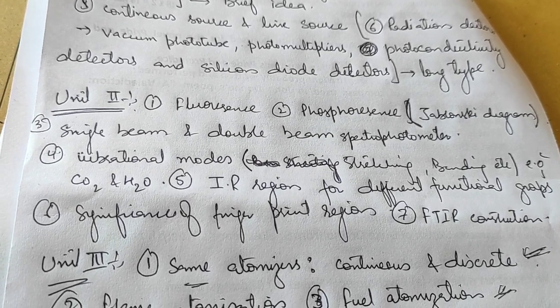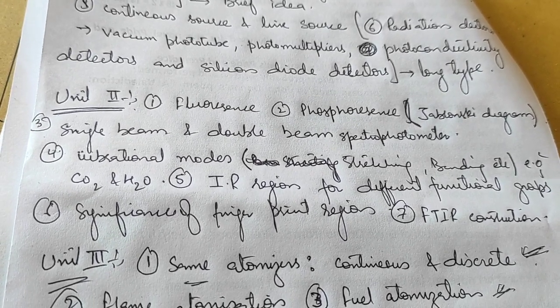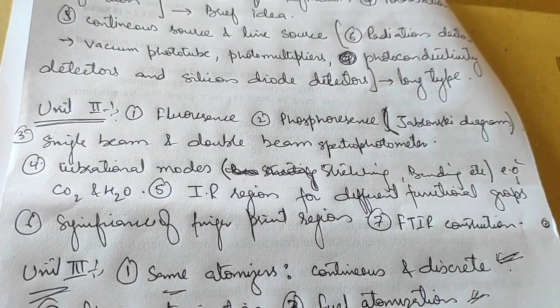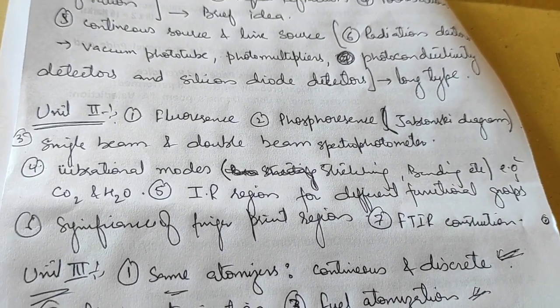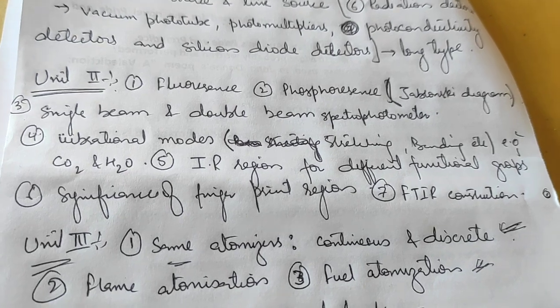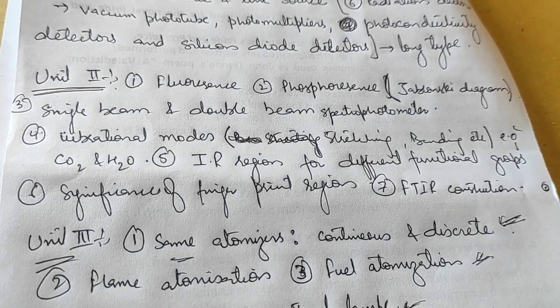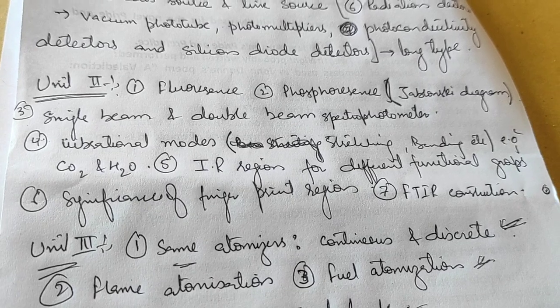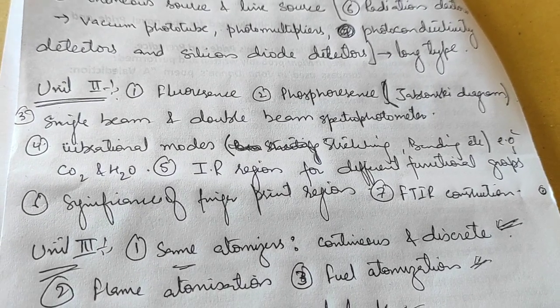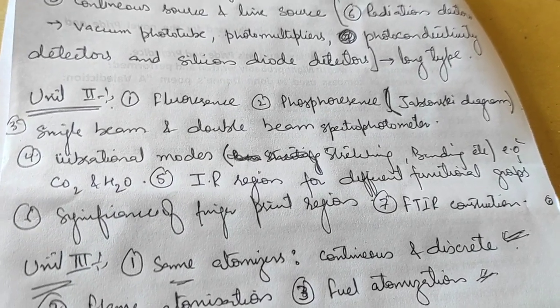Cover the different functional groups which absorb in different regions, like carbon monoxide absorbing at 1600-1700 cm⁻¹. Also prepare FTIR construction—that is, the instrument used in infrared spectroscopy. Go through the Fourier transform IR spectrophotometer.